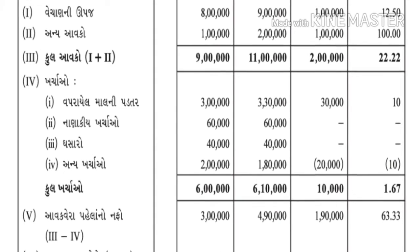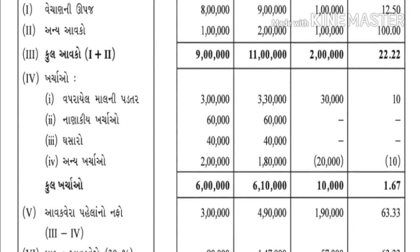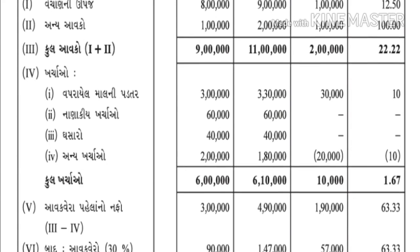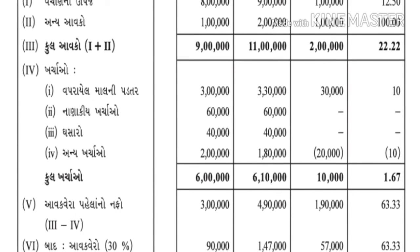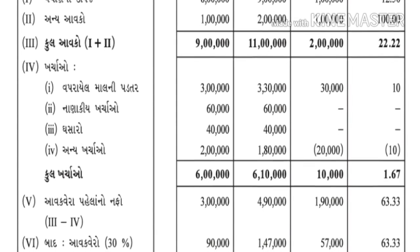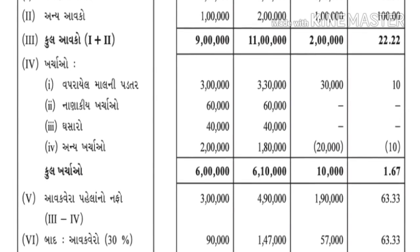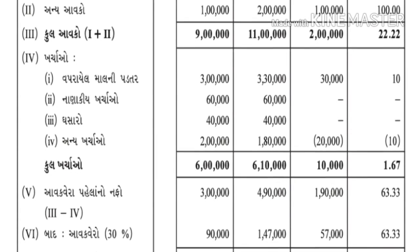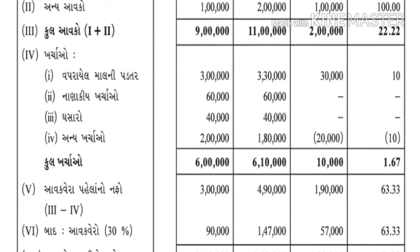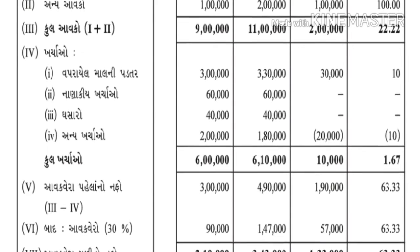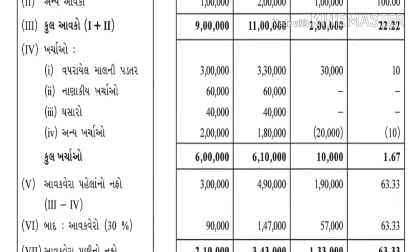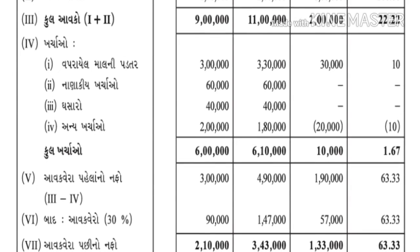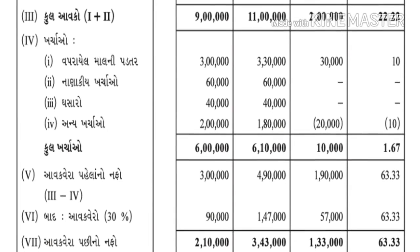ત્રણ મળી ગયો - ત્રણ લાખ. ત્યાં લખી નાખો: આવકવેરા પહેલાંનો નફો ત્રણ લાખ. એ જ રીતે, દરેક વર્ષમાં 30% આવકવેરો. અને 2017ની અંદર ચાર લાખ - આવકવેરા પહેલાંનો નફો છે.